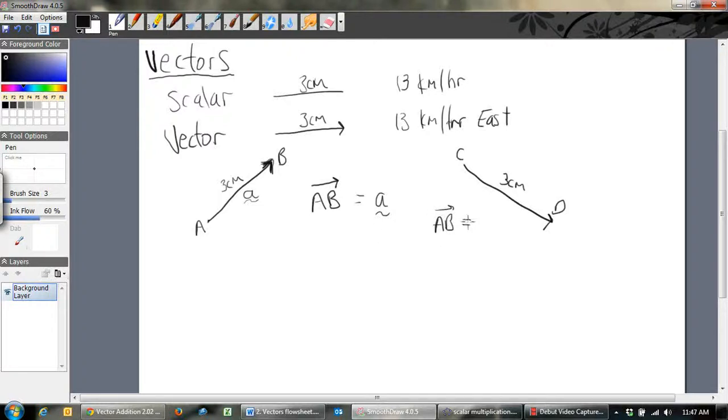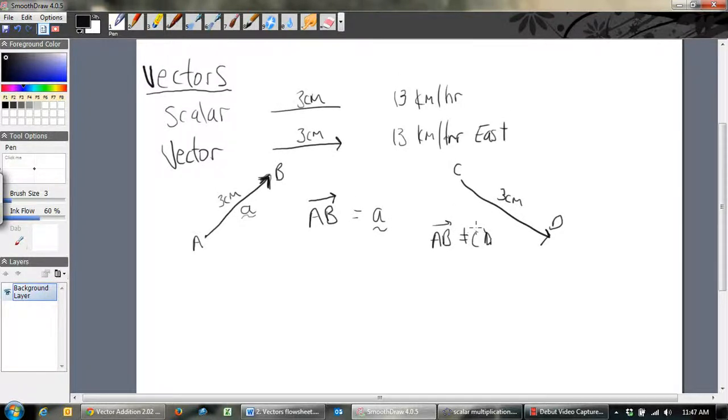So A, B, the vector A, B is not equal to the vector C, D. And so that's really important. They have to have, to be vectors to be equal, they have to have both the same length and the same direction. Okay let's just draw another one. We'll draw another one down here, and I'll try to do it the best I can, try to make them look parallel. And we'll have E, F.